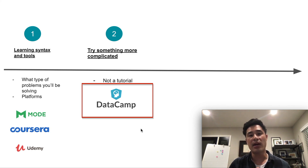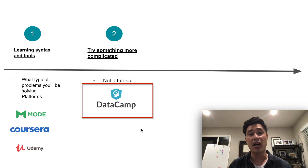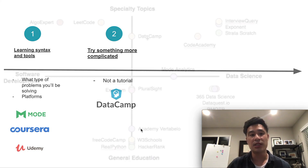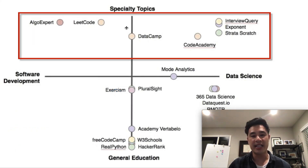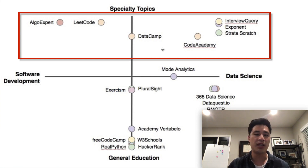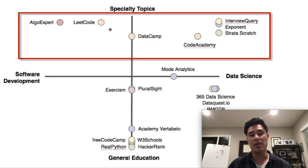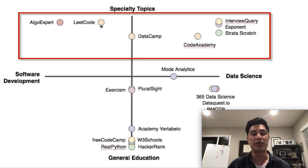Not only do we have DataCamp, but there are also other online resources like Code Academy, Stratascratch, and LeetCode — all geared towards helping you upskill on specialty-type topics that you could apply to either data science or software development, as this graph shows.